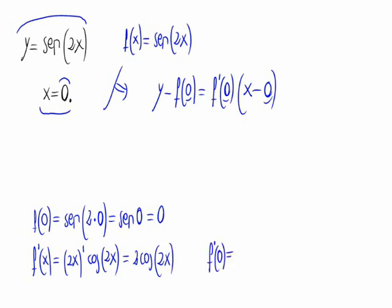So the derivative at the point 0 is 2 times the cosine of 2 times 0, which is 2 times the cosine of 0. That is 2 times 1.